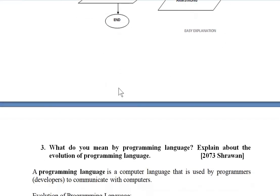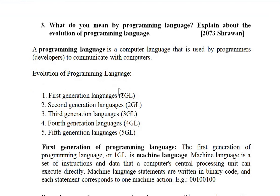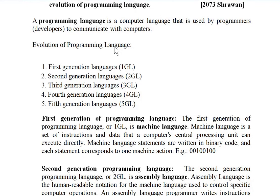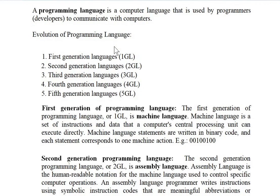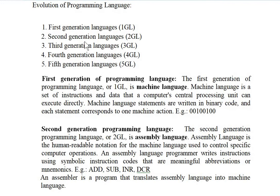The third question is: what do you mean by programming language? Explain the evolution of programming language. A programming language is a computer language used by programmers to communicate with a computer. For the evolution of programming languages, there are five generations.